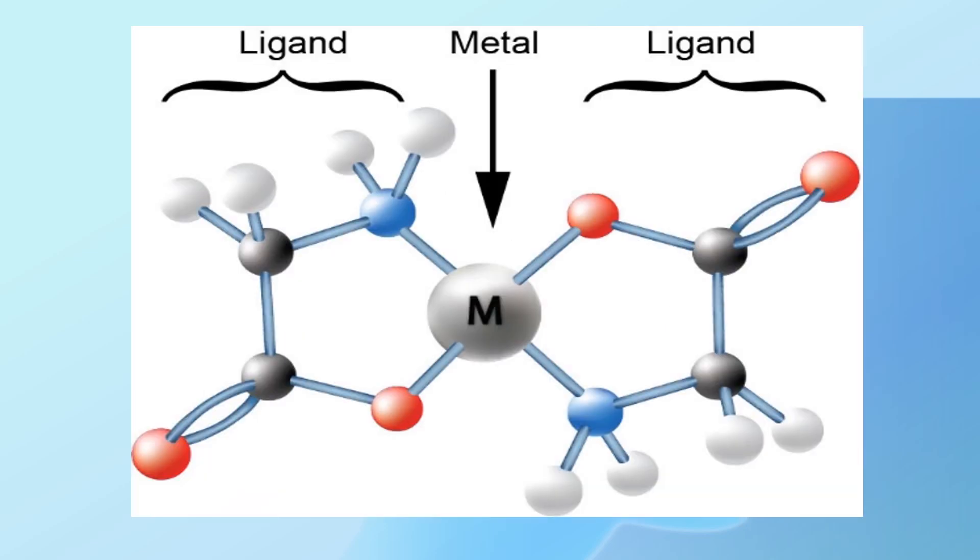Chelating ligands are those that have multiple donor atoms capable of forming multiple bonds with a single metal center. This can result in the formation of stable and highly complex structures.